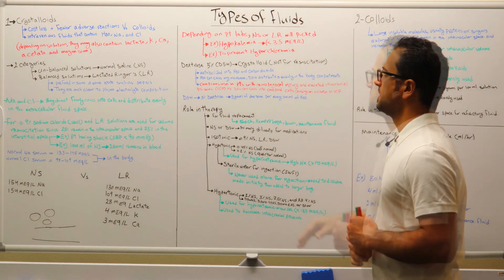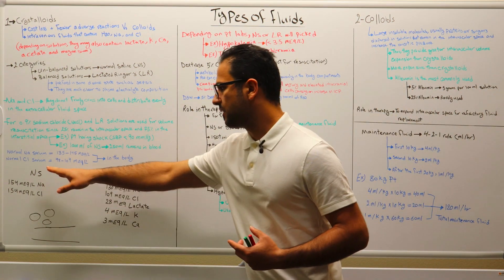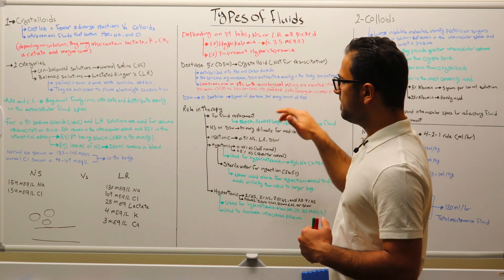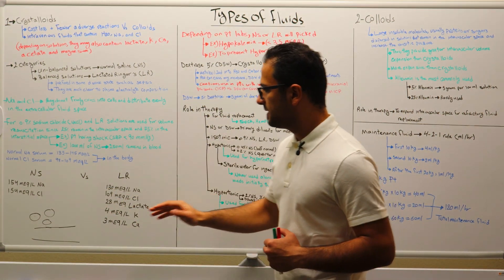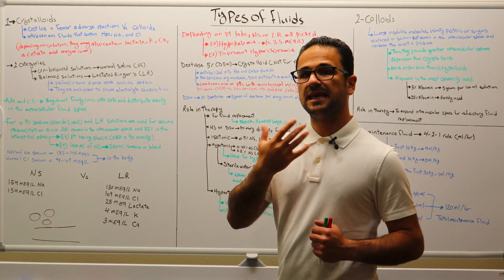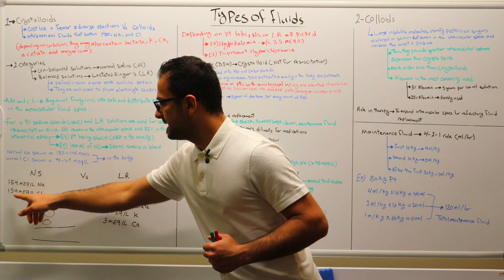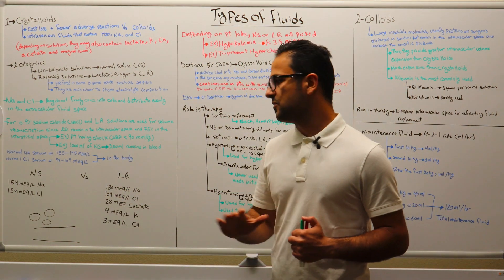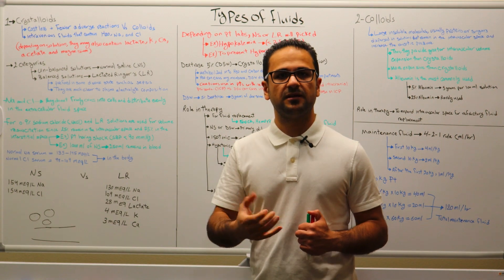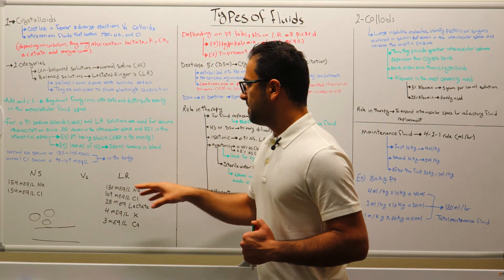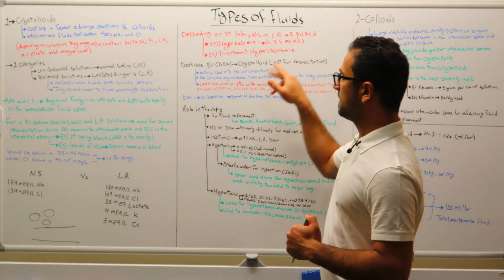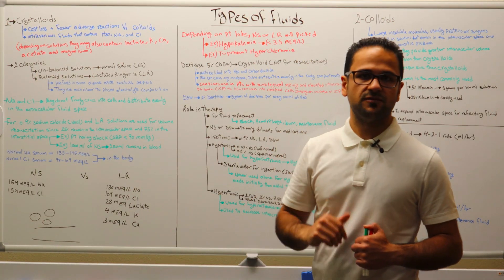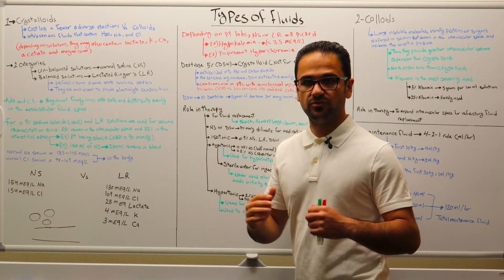Let's take another example. If a patient comes in at the borderline for chloride — let's say right at 108 or 109 milliequivalent per liter — to prevent hyperchloremia, we know both normal saline and lactated ringers contain chloride. However, normal saline contains 154 milliequivalent per liter of chloride, while lactated ringers contain 109 milliequivalent per liter. So the patient would be at higher risk of developing hyperchloremia with normal saline. Lactated ringers would be the safer option in this case.